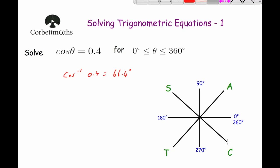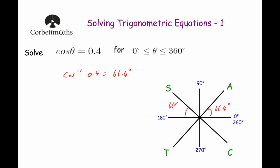Putting the lines in and marking 66.4° in each of the four quadrants. Each of these angles represents either 0.4 or negative 0.4, depending on which quadrant you're in. Starting from zero, we want to find where cosine gives a positive answer of 0.4.